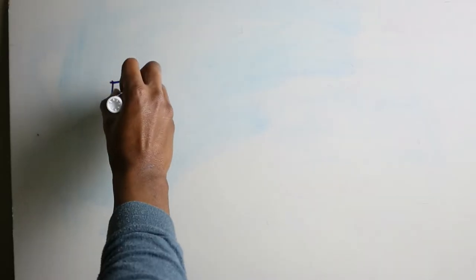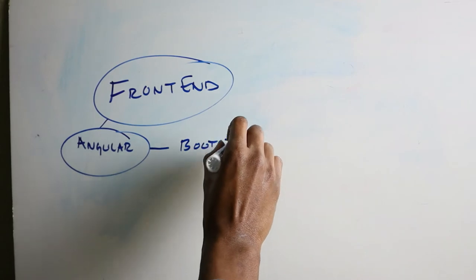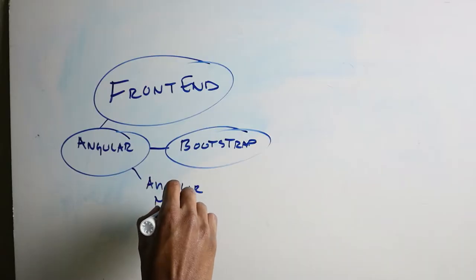So the first thing we're going to look into is the front end. With this particular application, I plan on using Angular — that's something I've been currently using for the last couple of months. I don't really like CSS, so I'm going to be using Bootstrap for the heavy lifting of the layout. Because I don't know anything about building components or making them stylish, I'm going to use Angular Material as the component library.